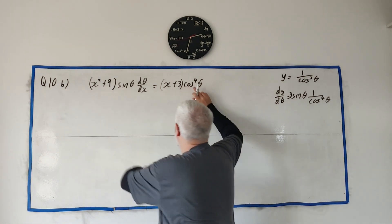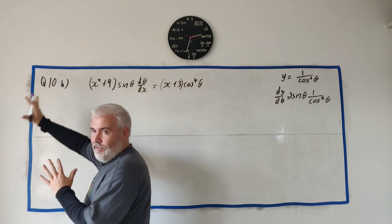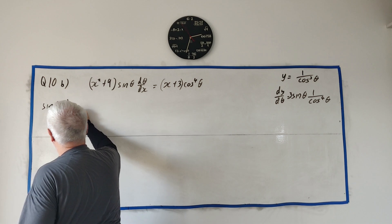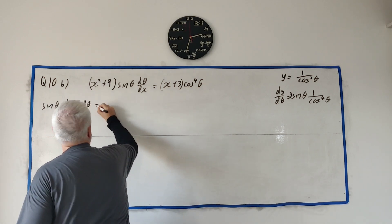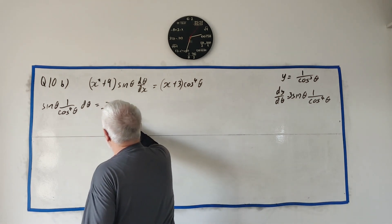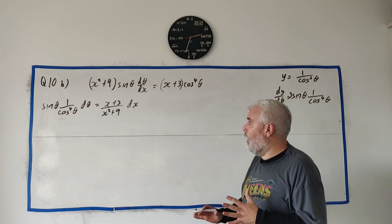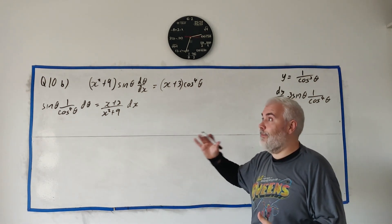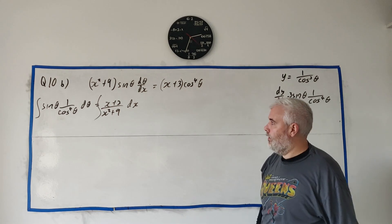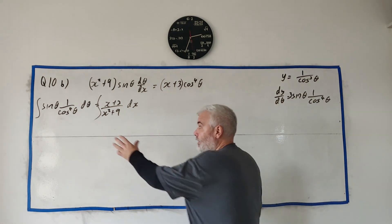Let's rearrange. I'll bring cosine to the power of 4 over to the left. We end up with sine theta times 1 over cosine to the power of 4 theta d-theta equals all the x's: x plus 3 divided by x squared plus 9 dx. We just integrate both sides.